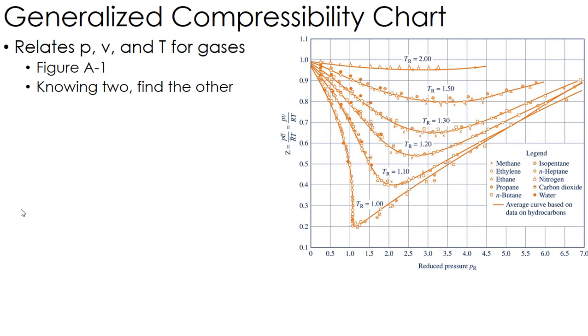And the picture you see here is a more simplified version of the chart that I'll show you in the example that I'm going to do, which is figure A-1 in the back of the book, part of those appendices that we've been using. And the idea here is if you know any two of these properties, you can find the other. So if you know pressure and volume, you can find temperature. Or volume and temperature, you can find pressure.